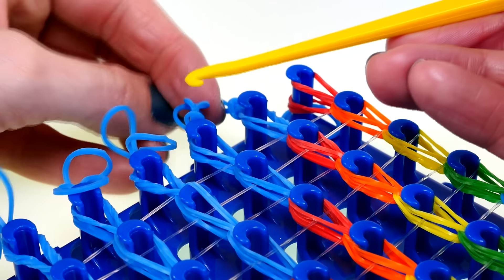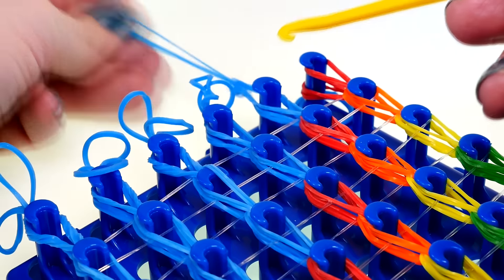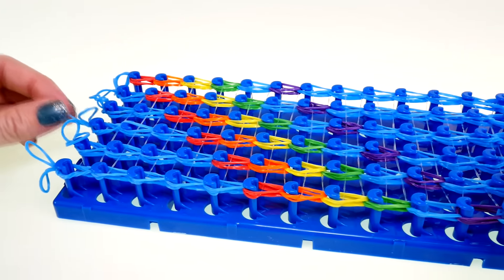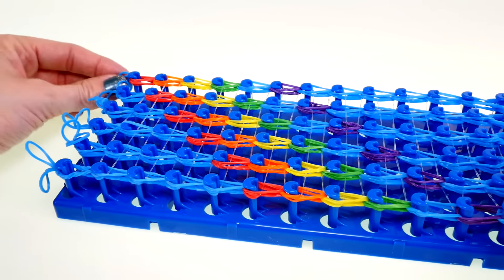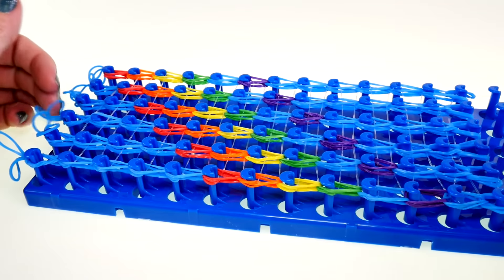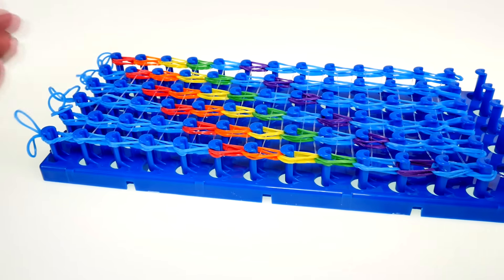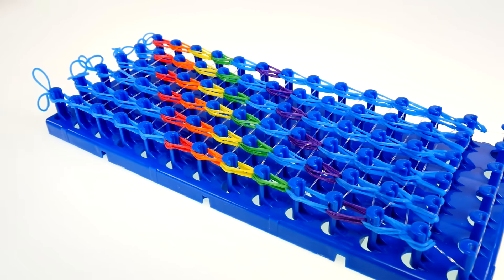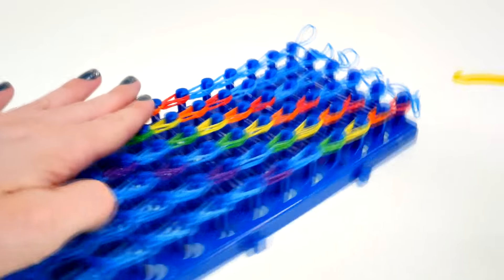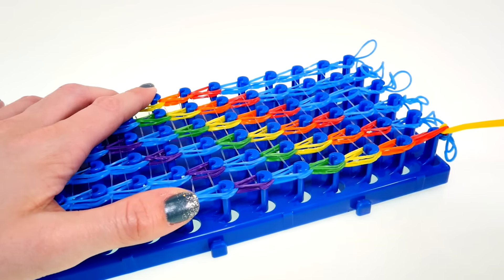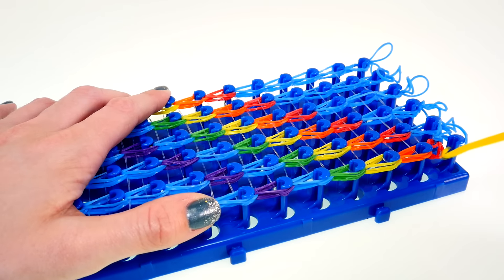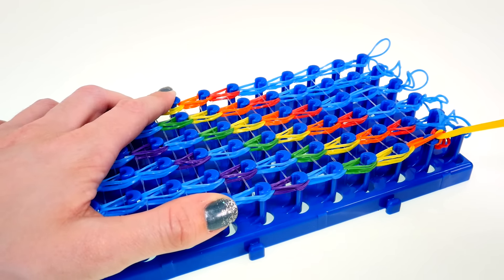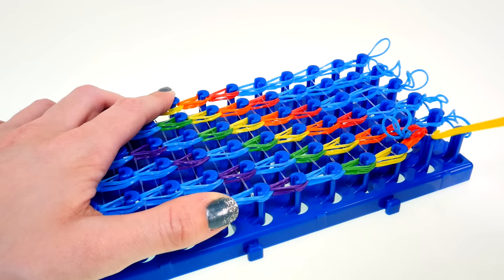Okay, so once these are locked into place it's time to carefully take the design off of the loom, and this will complete the first section of our bracelet or the first half. Now I've never done this before so I'm really nervous to take this off, but I'm just gonna use the loom and kind of just start pulling it off and working towards the center. I really hope I'm doing this right.